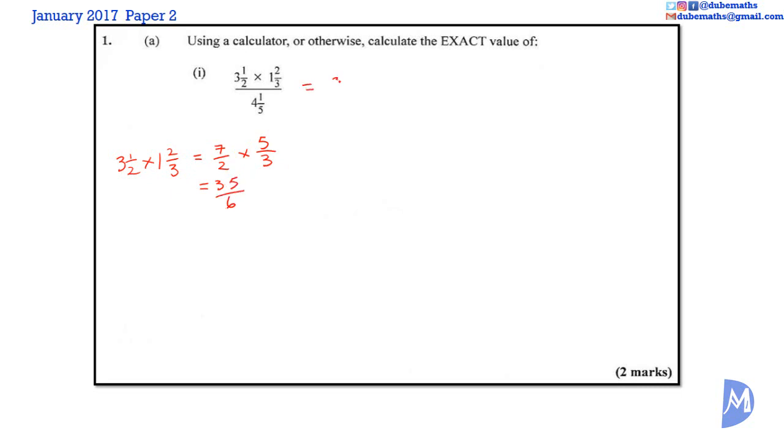So we get 35 over 6 divided by 4 and 1 fifth. So we work out the second part now. 35 over 6 divided by 4 and 1 fifth. 4 and 1 fifth as an improper fraction is 4 multiplied by 5 is 20 plus 1, 21 over 5.